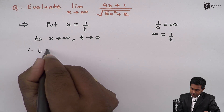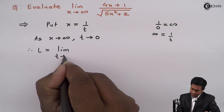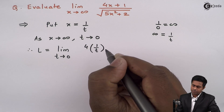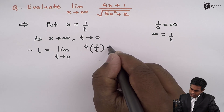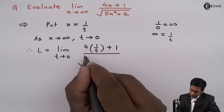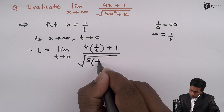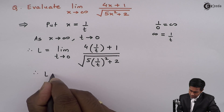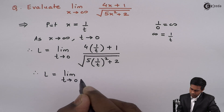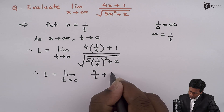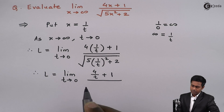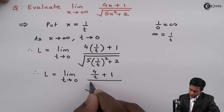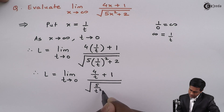Therefore, L becomes the limit as t tends to 0 of: 4 times (1/t) plus 1, all divided by the square root of 5 times (1/t)² plus 2. This simplifies to the limit as t tends to 0 of (4/t + 1) divided by the square root of (5/t² + 2).